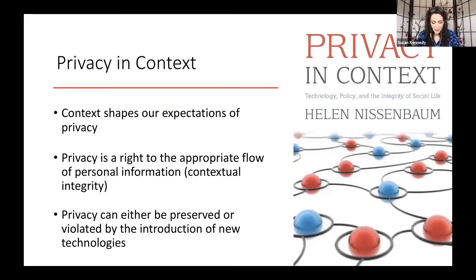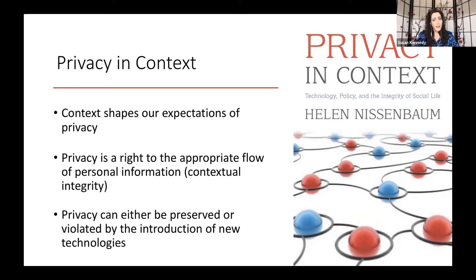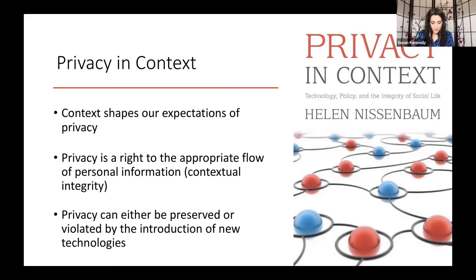Enter the amazing Helen Nissenbaum. She's a professor of information science at Cornell Tech, and she published the book Privacy in Context. Her work focuses on how specific context — thinking beyond just the public and private sphere — can shape our expectations of privacy. It might be appropriate for a doctor to ask my age, but it would seem inappropriate if a bank teller asks my age. We have certain expectations of privacy and where information should go depending on the context. According to Nissenbaum, privacy is a right to the appropriate flow of personal information. When information flows appropriately, we've preserved contextual integrity. When we violate it, we violate contextual integrity and violate privacy.